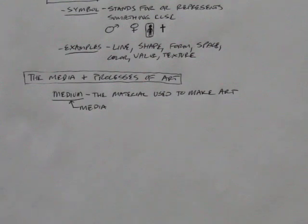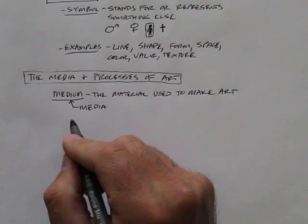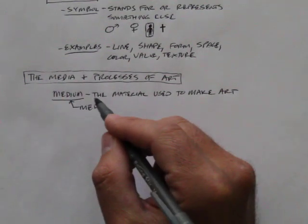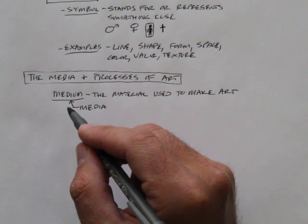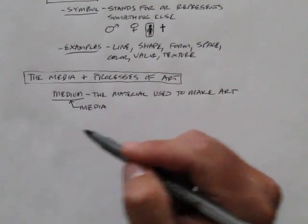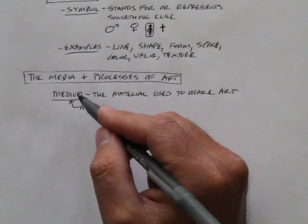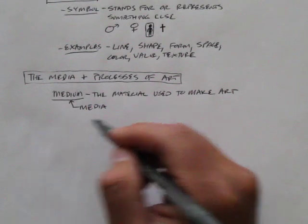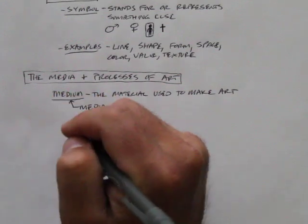All right, we are going to just look at one other thing: perception. Now, we're going to talk about some different media and processes of art, like actual ones like drawing and painting and printmaking and stuff like that. But before we do that, we're going to look at something called perception.